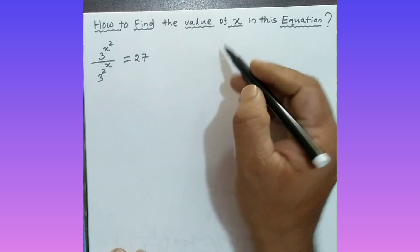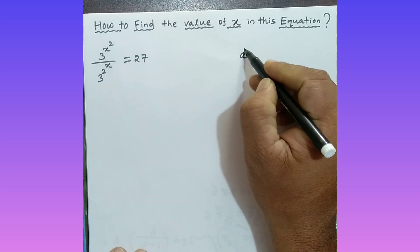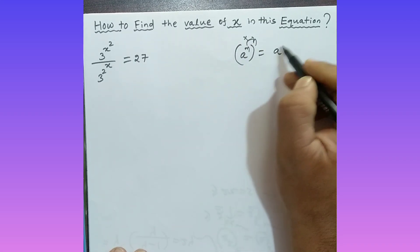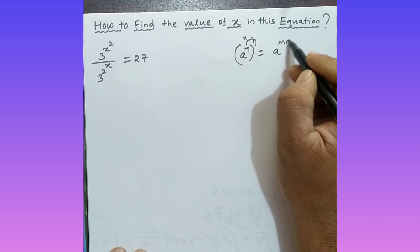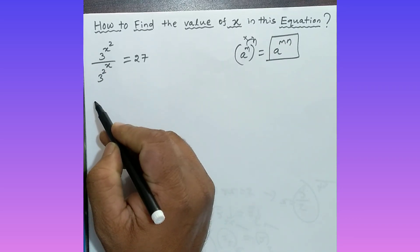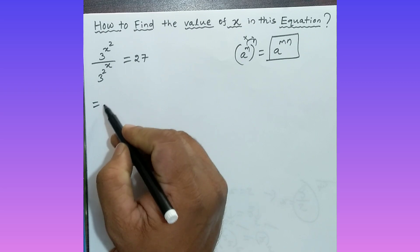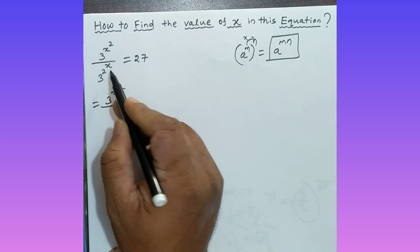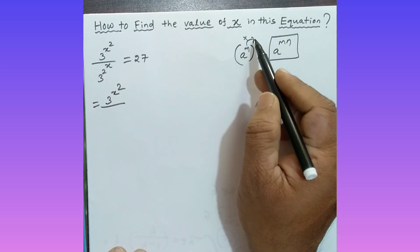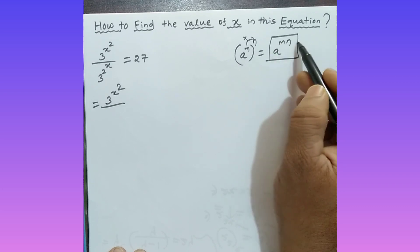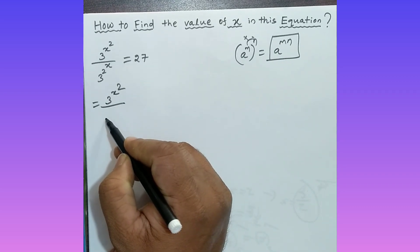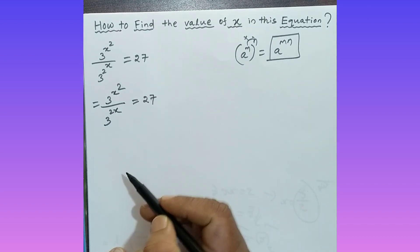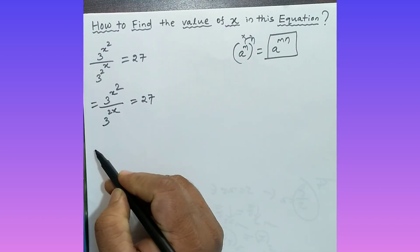There is a formula you should know: a to the power m, raised to the power n, equals a to the power mn. Applying this to the numerator, 3 to the power x, raised to the power 2, becomes 3 to the power x squared. So we have 3 to the power x squared divided by 3 to the power 2x, which gives us 3 to the power 2x, equal to 27.